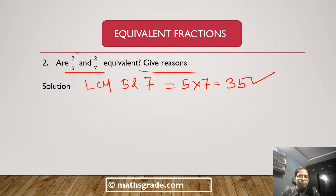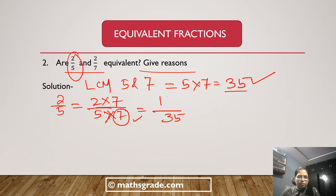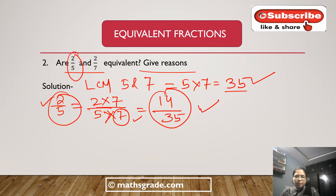Now we find the equivalent fraction of 2/5. We need to find the number that multiplies denominator 5 to get 35. In the 5 times table, 5 multiplied by 7 gives 35. So we multiply the same number 7 in the numerator: 2 multiplied by 7 is 14. So 14/35 is the equivalent fraction of 2/5. Both 2/5 and 14/35 are equivalent fractions.